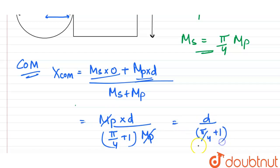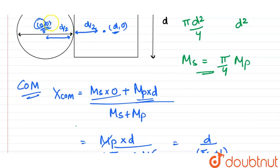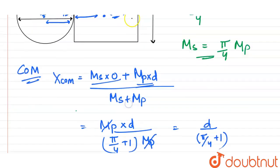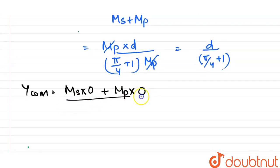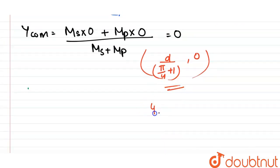For the y-coordinate: y_cm equals (mass of disc × y-coordinate of disc's center of mass + mass of plate × y-coordinate of plate's center of mass) divided by (ms + mp), which comes out to be 0. So the center of mass of the system is at (d/(π/4 + 1), 0), or equivalently (4d/(π + 4), 0).